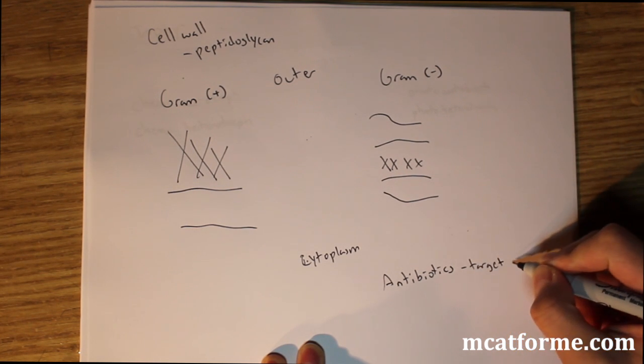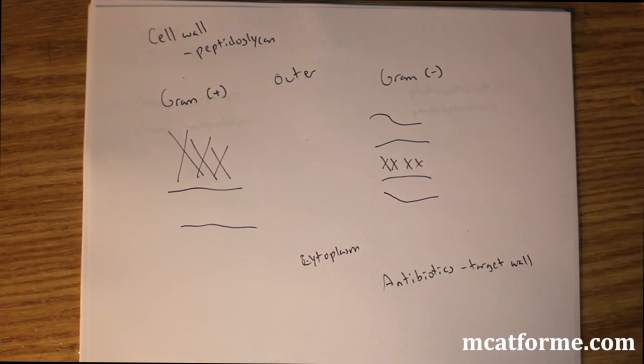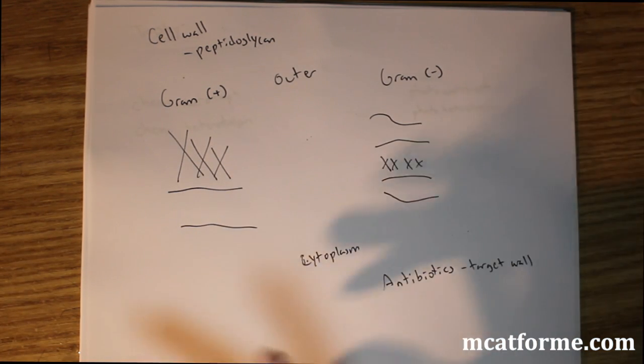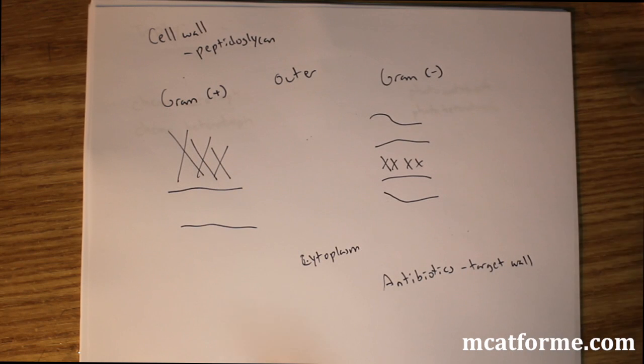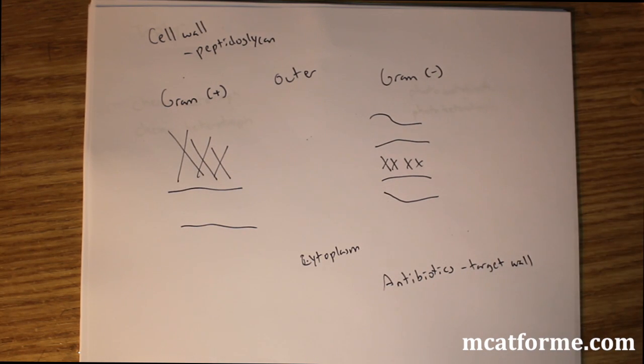And they'll say if we have this antibiotic that works on a certain cell wall, works on the peptidoglycan layer of a cell wall, we know that it has to be gram positive and they'll probably give us a choice of a bunch of different types of bacteria. Maybe throw in a eukaryote in there, maybe an archaea. And they'll try to trick us with that. And we have to remember that gram positive has that very thick peptidoglycan layer.